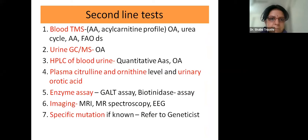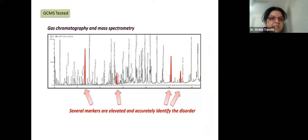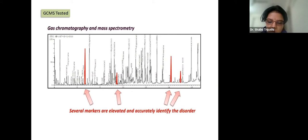When GC-MS is done, different metabolites are elevated above the normal population. The lab reports which of the hundred-plus metabolites are increased, and we must interpret those findings against the clinical background of the patient. Sometimes the interpretation does not match the clinical picture, and we need to cross-check with the lab. Treatment is mainly general management, followed by specific treatment for the suspected disorder, and then long-term management.